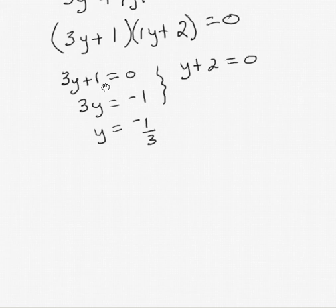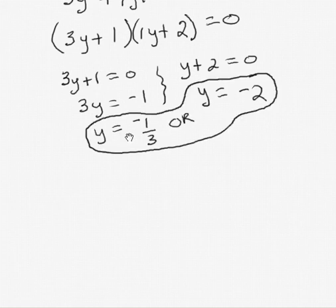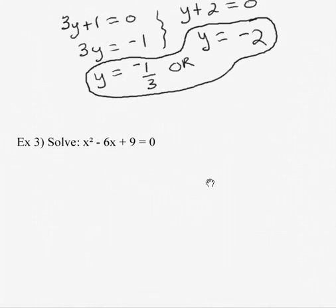We're going to set each factor equal to zero and solve each equation. On the left, we're going to subtract one, then divide by three. On the right, we're going to subtract two. And those are my two answers, y equals negative one-third, or y equals negative two. So again, we're solving. Let's solve one more example.